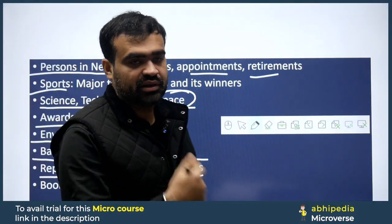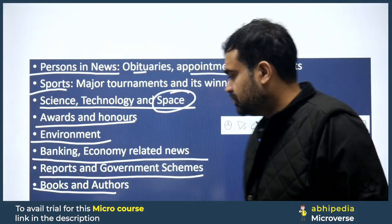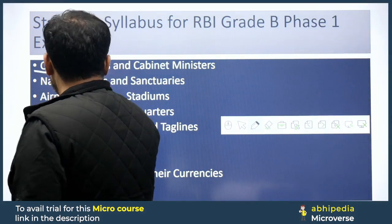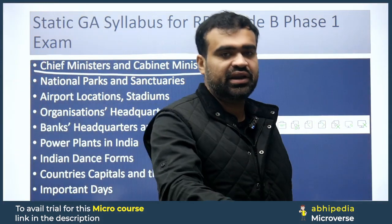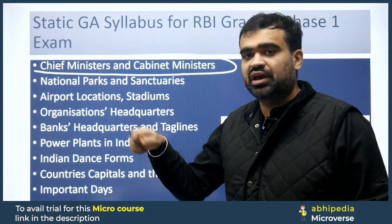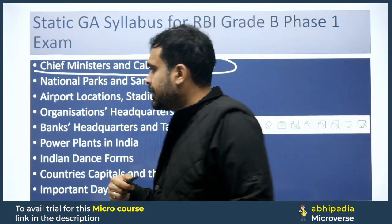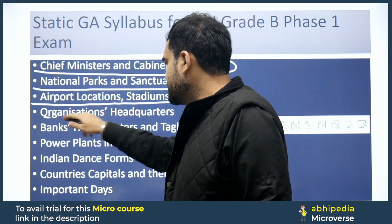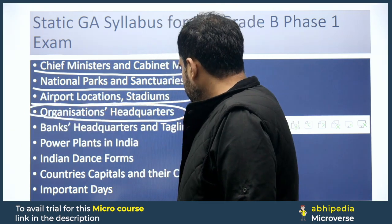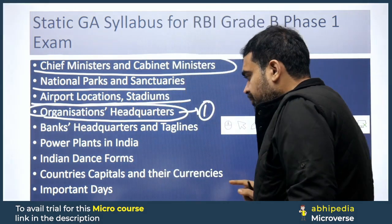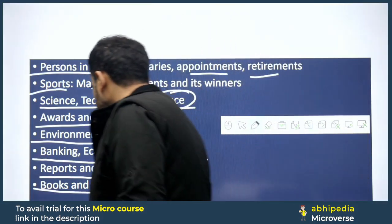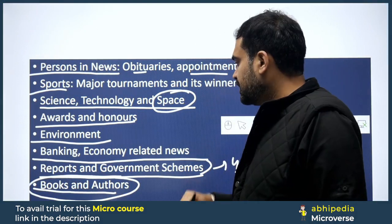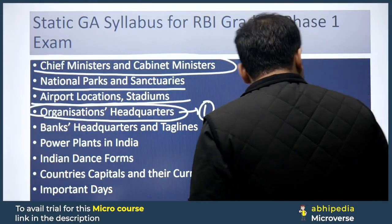Books and Authors — one question is guaranteed from here. Reports and Government Schemes — four to five questions can be expected from this area. Now for the Static Part: Chief Ministers and Cabinet Ministers — you must check who the current CMs, cabinet ministers, and council of ministers are at least the day before the exam. National parks and wildlife sanctuaries, airports with their locations, stadiums, organizations and their headquarters — one question is assured from these.